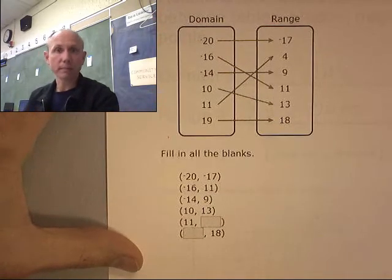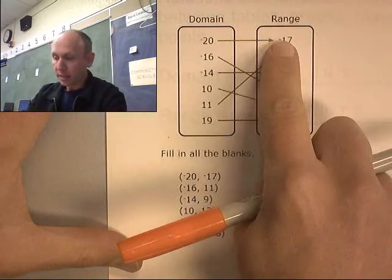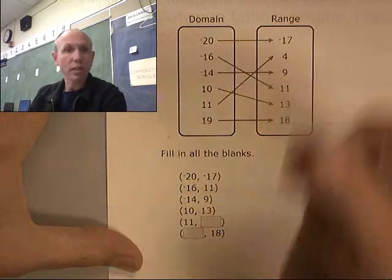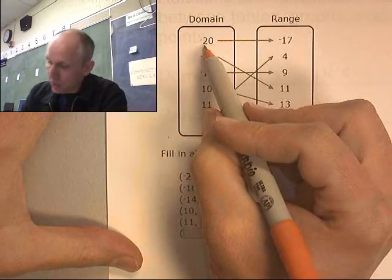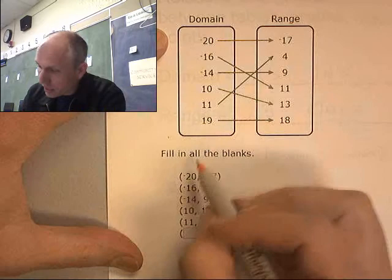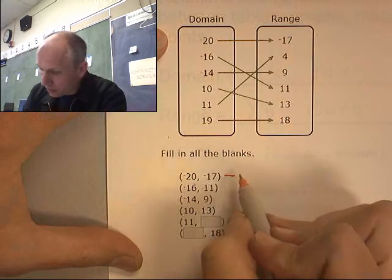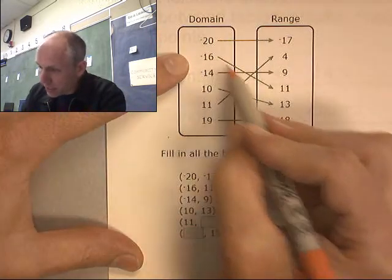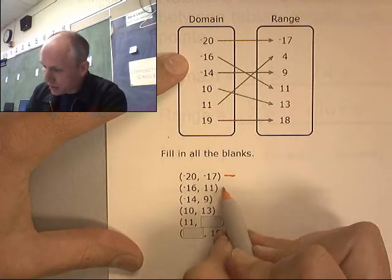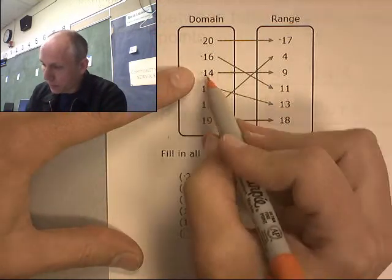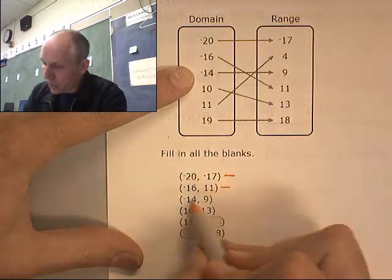Okay, here's another mapping diagram. Now we're going to take this mapping diagram and turn it into a set of points. So negative 20 with negative 17. Where's that one? Negative 16 going with 11. Negative 16 with 11. There's that one. Negative 14 with 9. Negative 14 with 9. That one.